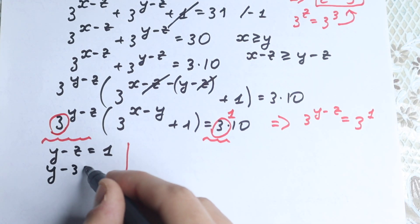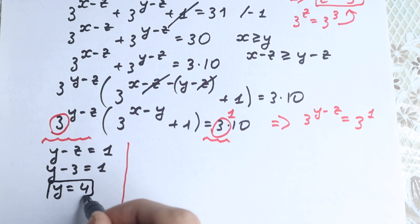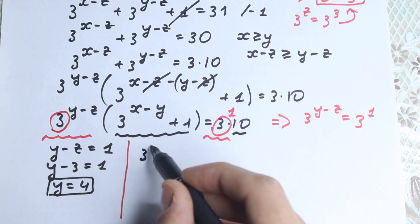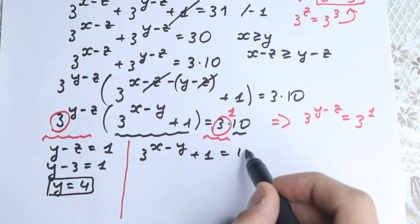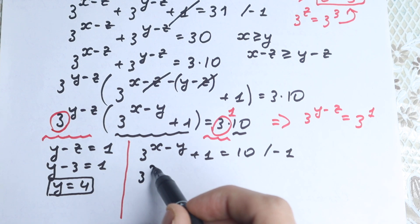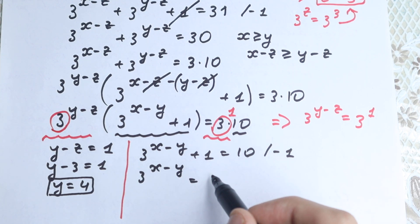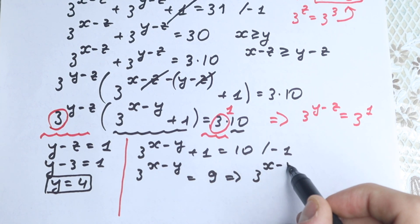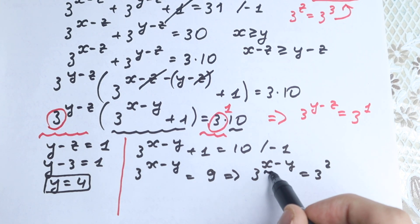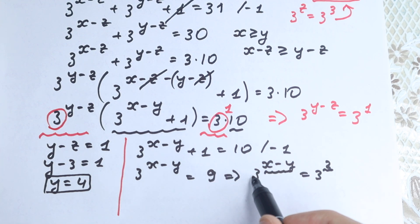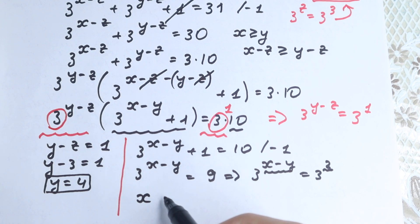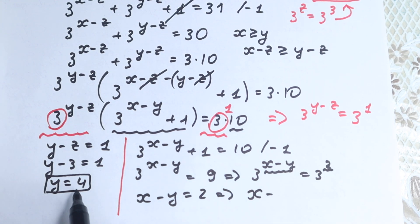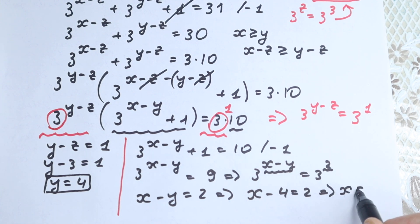We found y equals 4. Now let's go to the parenthesis, which equals 10. So 3 to the power x minus y plus 1 equals 10. Subtracting 1 from both sides: 3 to the power x minus y equals 9, which is 3 squared. So x minus y equals 2. Since y equals 4, x minus 4 equals 2, and therefore x equals 6.